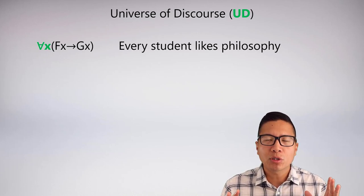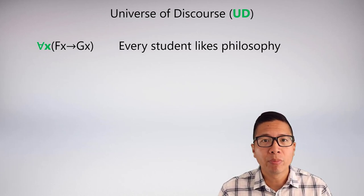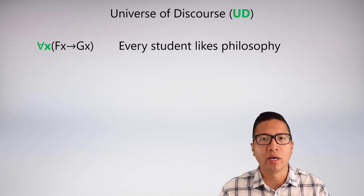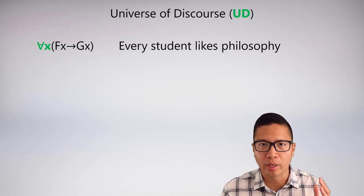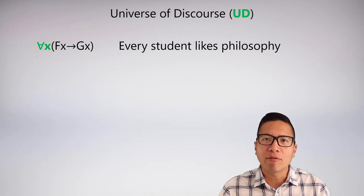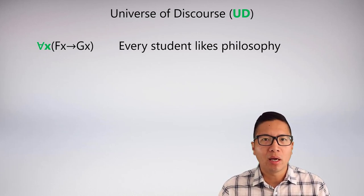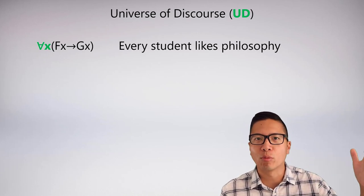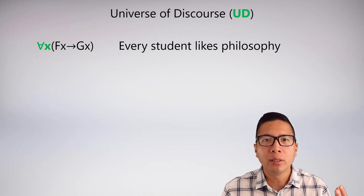The universe of discourse, or UD, is a pretty straightforward concept — it's about what the quantifier 'for all' really means. In the past we've left it unrestricted, meaning 'all' literally means all things. But in reality we rarely talk like that. If I want to say 'every student likes philosophy,' do I mean all possible things, including potential students in far-away galaxies? That seems like a ridiculous scope.